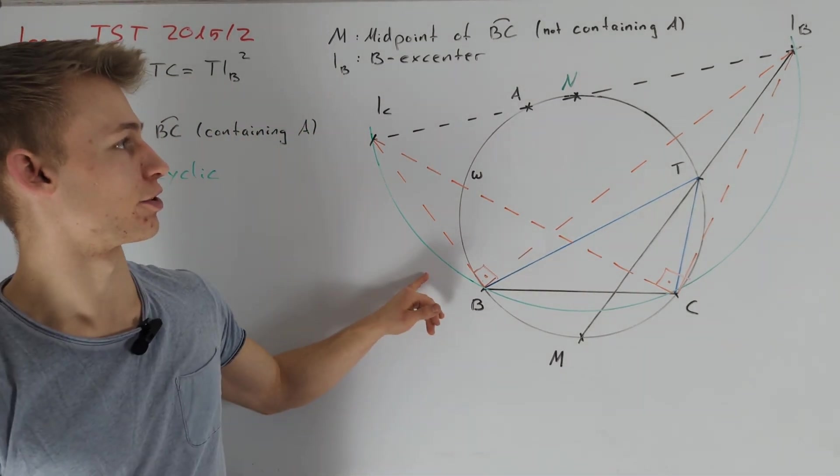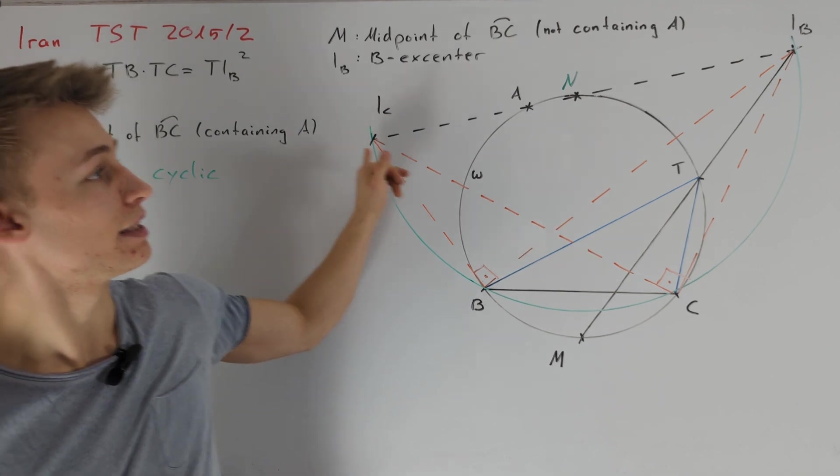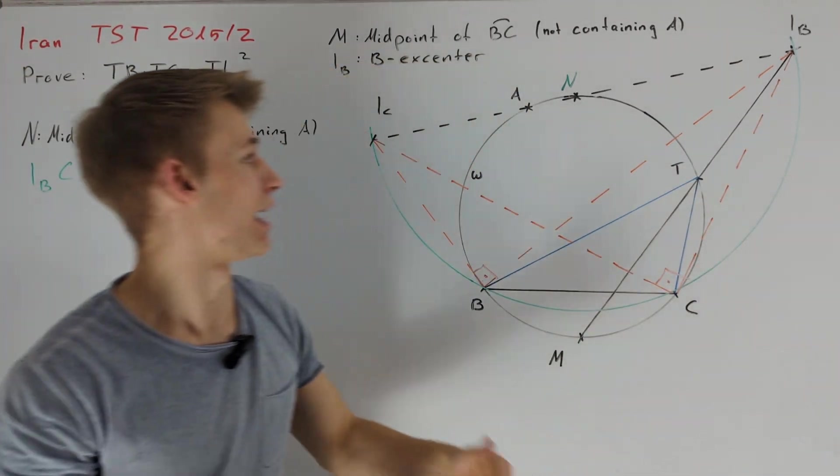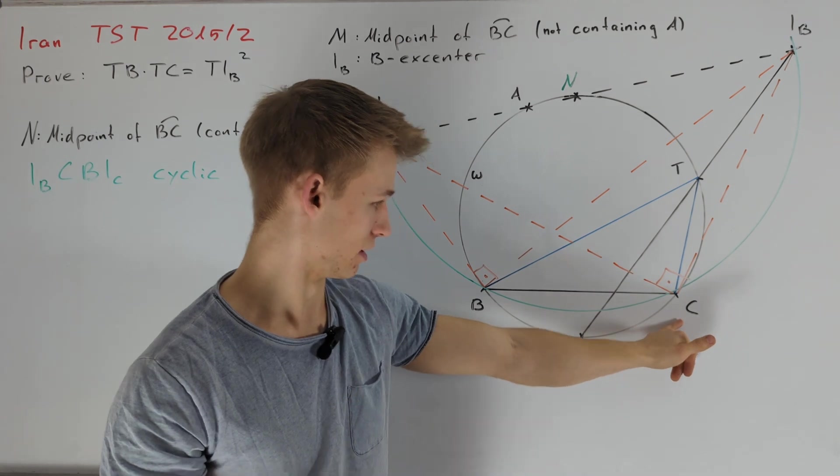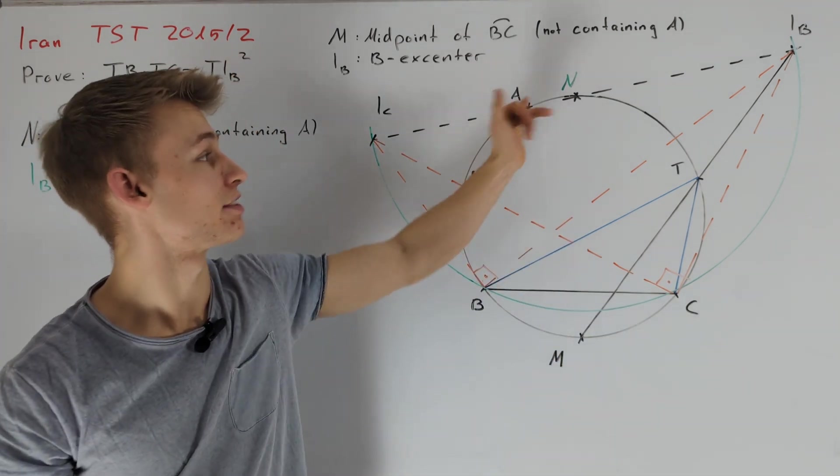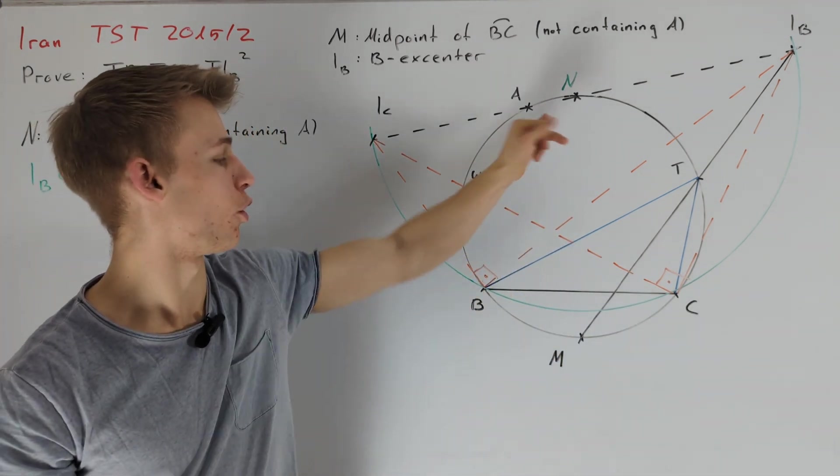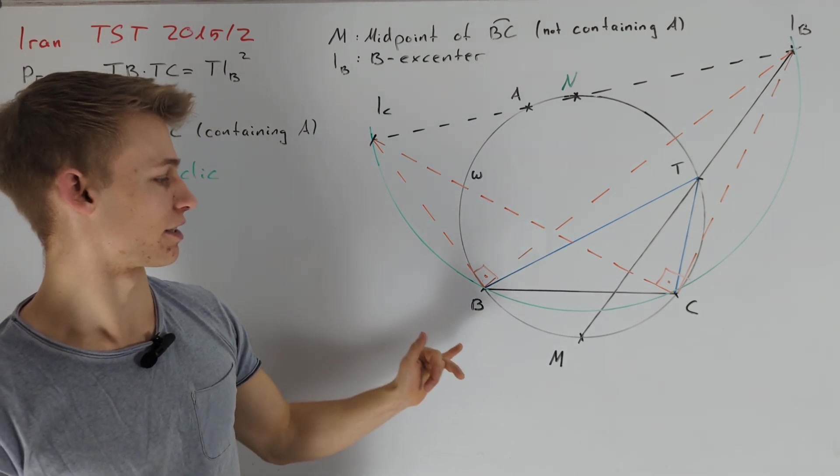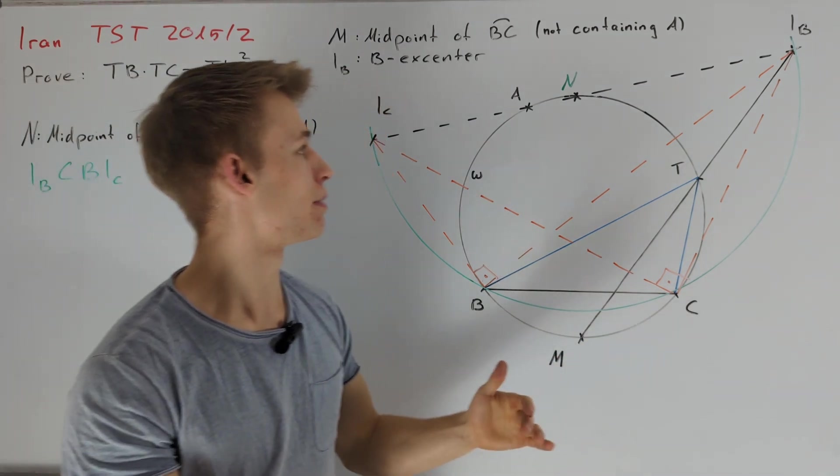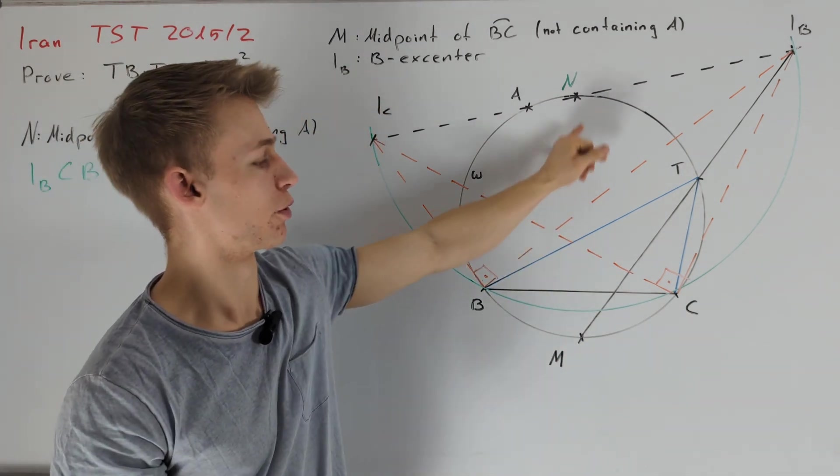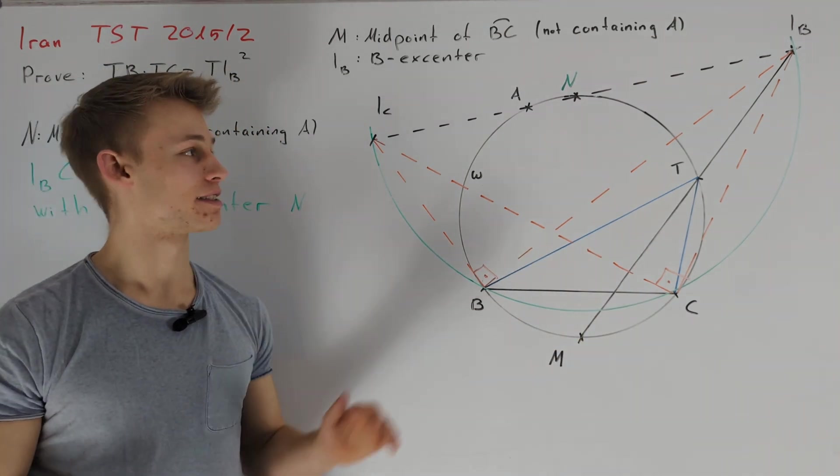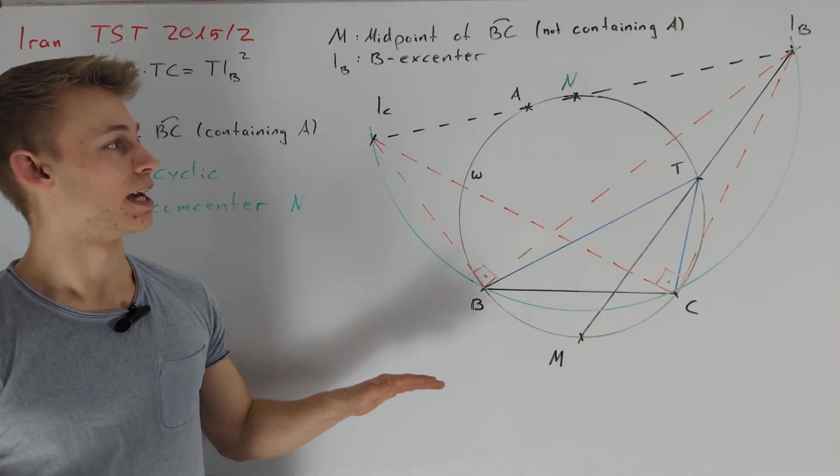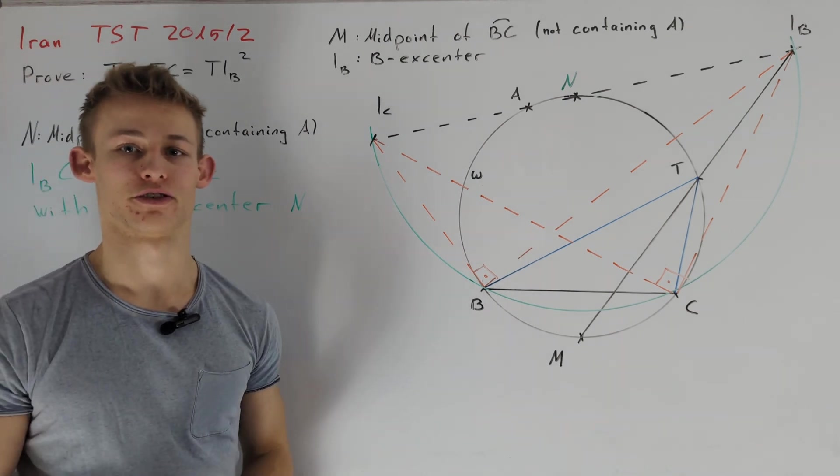Since we know that N lies on this exterior angle bisector and since N also lies on the perpendicular bisector of BC, this implies that N must be the midpoint of this circle. This proves our claim and, in general, I would say that this is a really important configuration and you should keep this in mind when solving geometry problems.